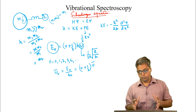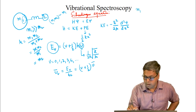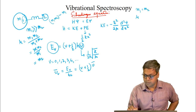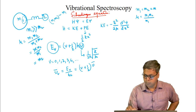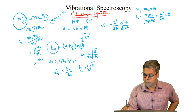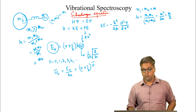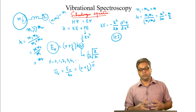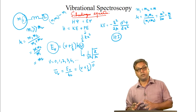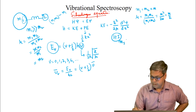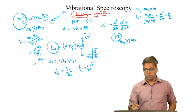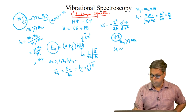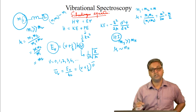For a homonuclear molecule where m₁ = m₂ = m, the reduced mass is m²/2m = m/2. For a heteronuclear molecule like HI where m_I ≫ m_H, the reduced mass is approximately equal to m_H. Now let us draw the vibrational energy levels using the expression E = (v + ½)hν.